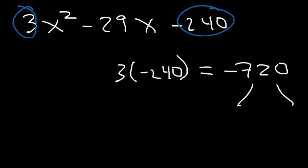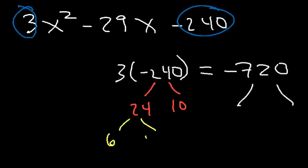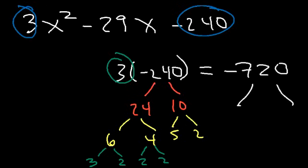To work without a calculator, break 240 into smaller numbers. We can break it into 24 and 10; 24 into 6 and 4; 10 into 5 and 2; 6 into 3 and 2; and 4 into 2 and 2. So the prime factors of 240 are 3, 2, 2, 2, 2, 5, and 2 — meaning 3 × 2⁴ × 5 × 2, or 2⁵ × 3 × 5. We'll use these to build factor pairs of 720.